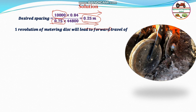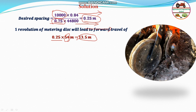One revolution of the metering disc will lead to a forward travel of the planter equal to 0.25 × 54 meters. Because the metering disc requires this much travel to place 54 seeds, since each seed requires 0.25 meter spacing. With 54 cells in the disc rotor, one rotation drops 54 seeds. Therefore, 54 × 0.25 = 13.5 meters is the forward travel of the planter per revolution of the metering disc.